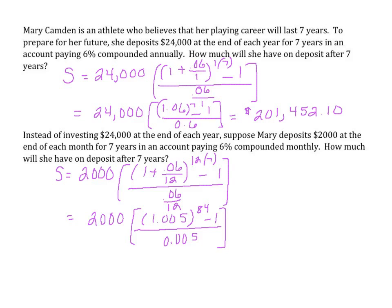Using a calculator, take 1.005 to the 84th power, subtract 1, divide that by 0.005, and multiply by 2,000. At the end of 7 years, she will have $208,147.85. Clearly it would be better if she deposits monthly instead of one lump sum annually, as she would end up with more money after 7 years.